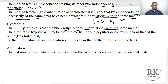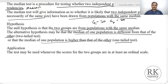The alternative hypothesis can be two-sided — that the medians of the two populations are different — or one-sided, that the median of one population is higher than the other. The test may be used whenever scores for the two groups are on at least an ordinal scale, including interval, ratio, or continuous data.